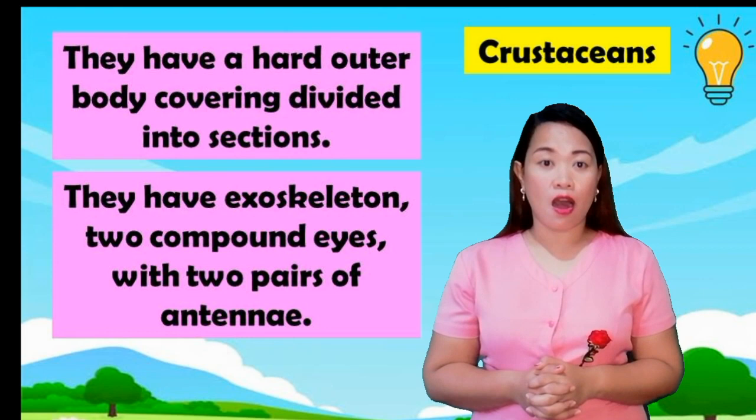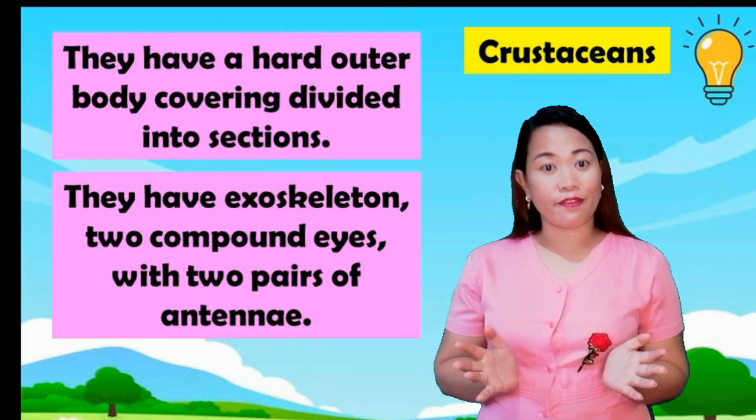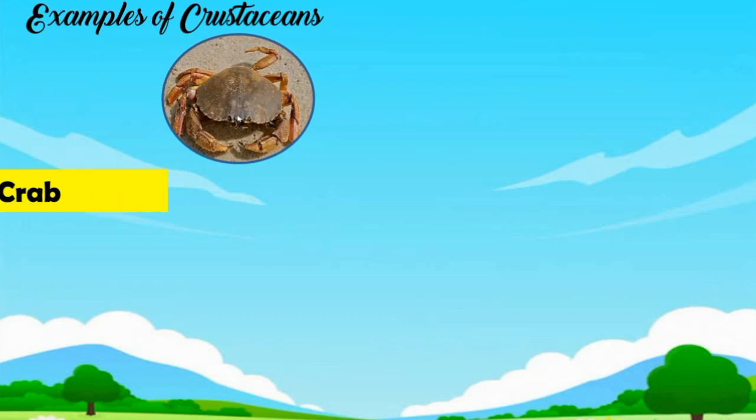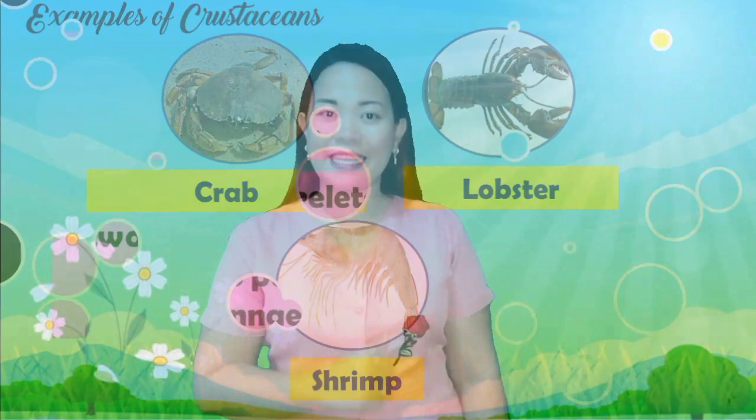Crustaceans have a hard outer body covering divided into sections. They have exoskeletons, compound eyes, and two pairs of antennae. Examples of crustaceans: crab, lobster, shrimp.